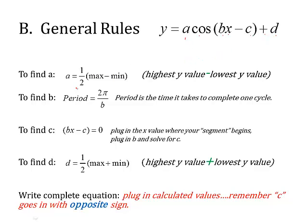Now to find the a value, what do you do? You take the highest y value on the graph and subtract the lowest y value. Remember, it's subtract there. Then you multiply it by one half. That will give you your value for a.